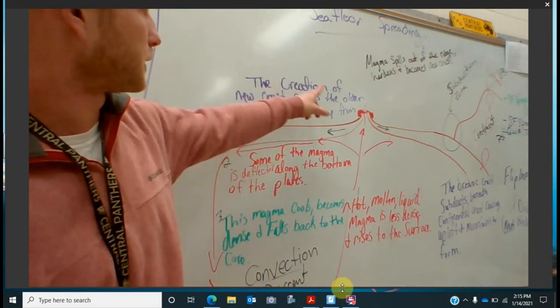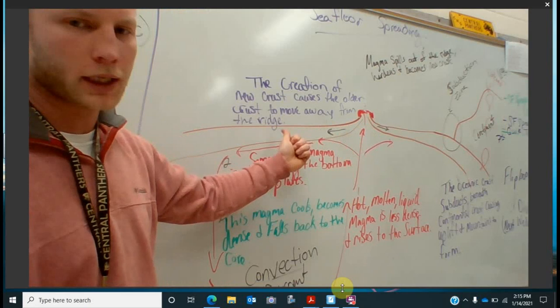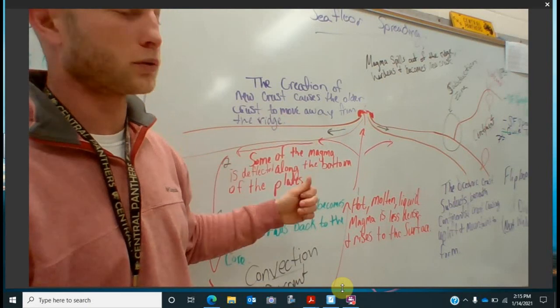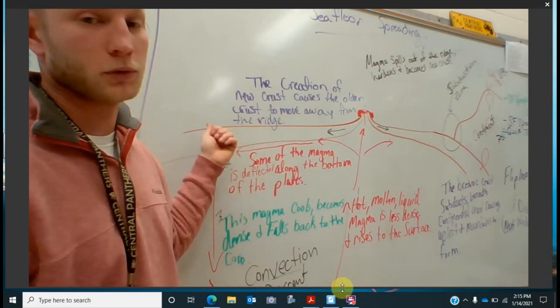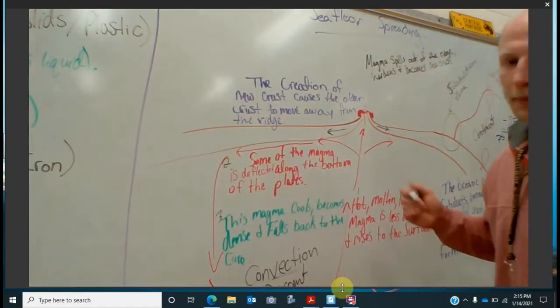And it has one of two directions where it can go. One is where we see our seafloor spreading, where it comes out at the top here. It bubbles out at the top. The magma spills out of the ridge. It hardens and becomes new crust. And this is what we've been talking about. As that happens, the creation of that new crust causes the older crust to then move away. And the crust, and then that older crust then just moves away.